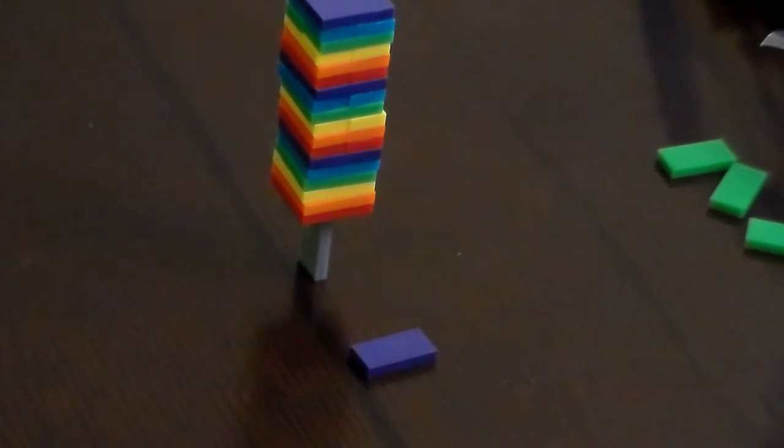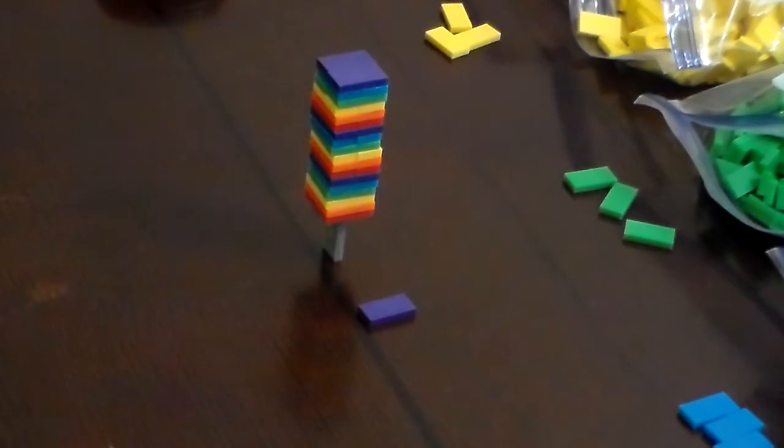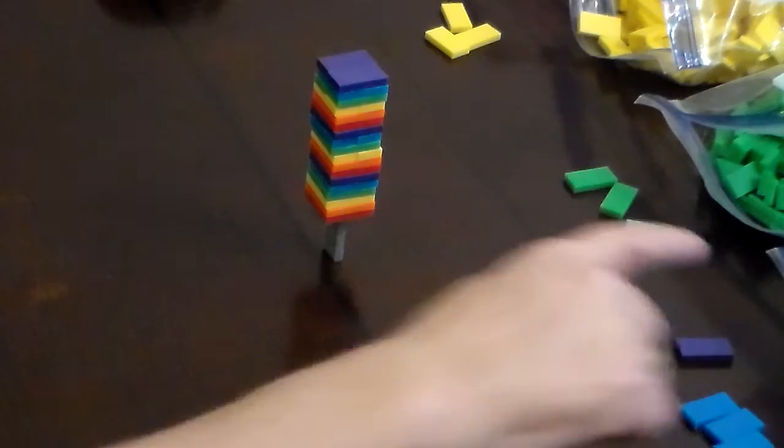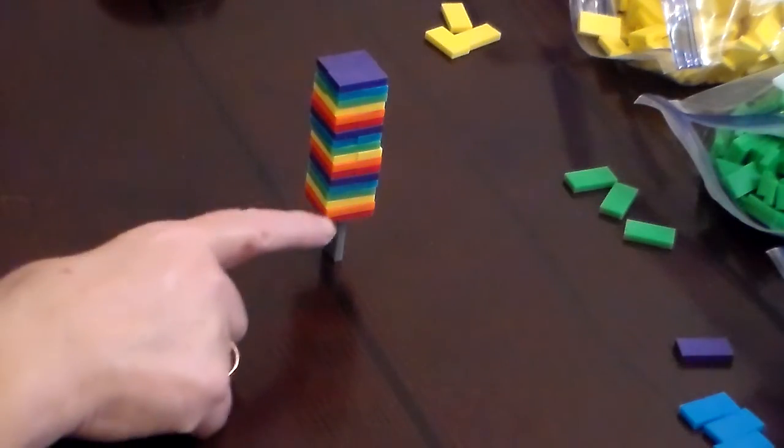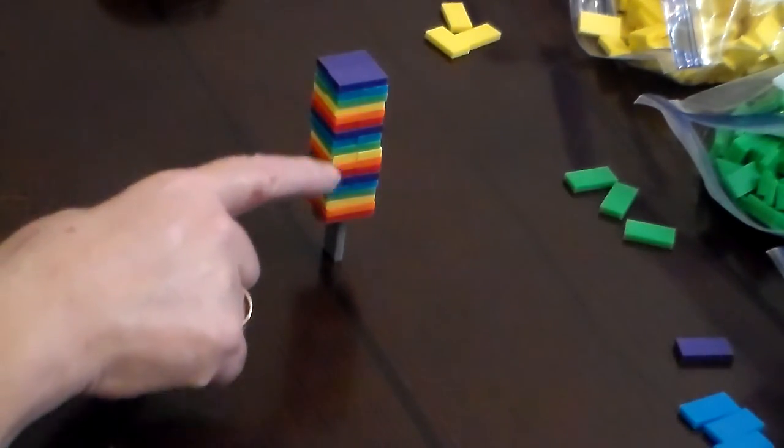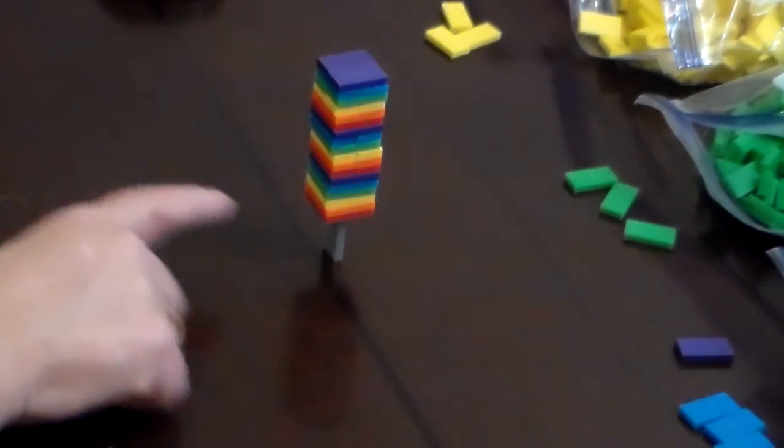Alright. This is for the category of stacking, subcategory mini dominoes. I have 37 dominoes on top of the one. Each purple layer is 12. There's 36 plus the one at the base.